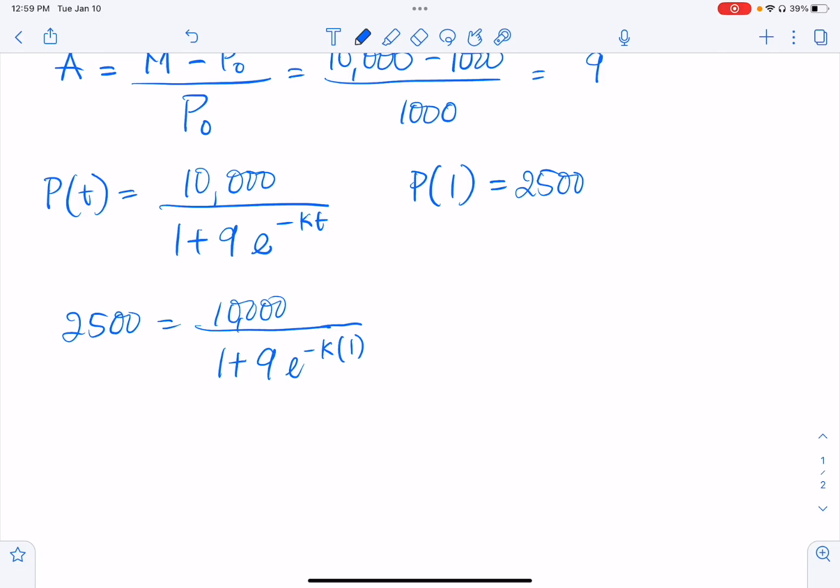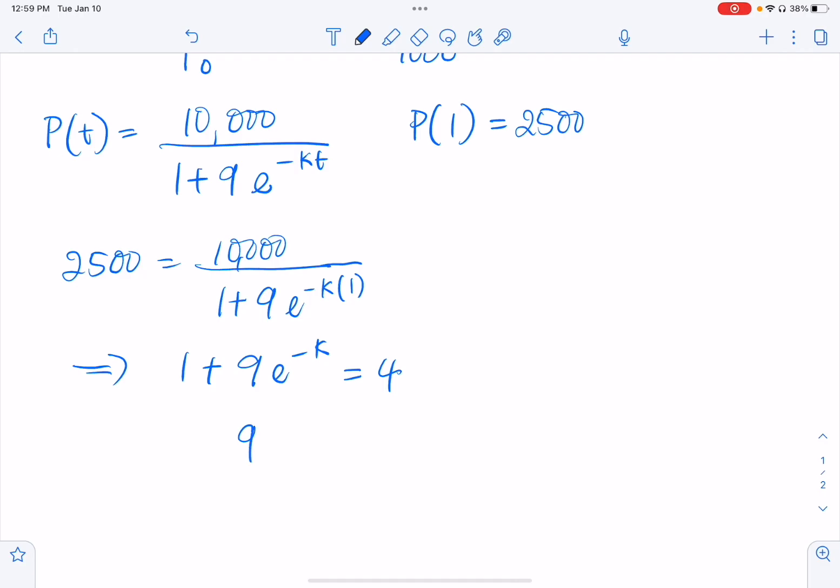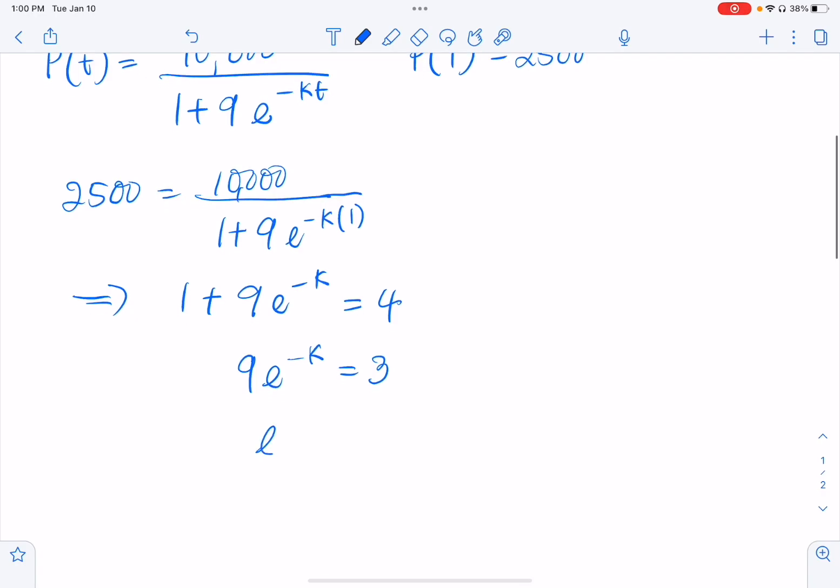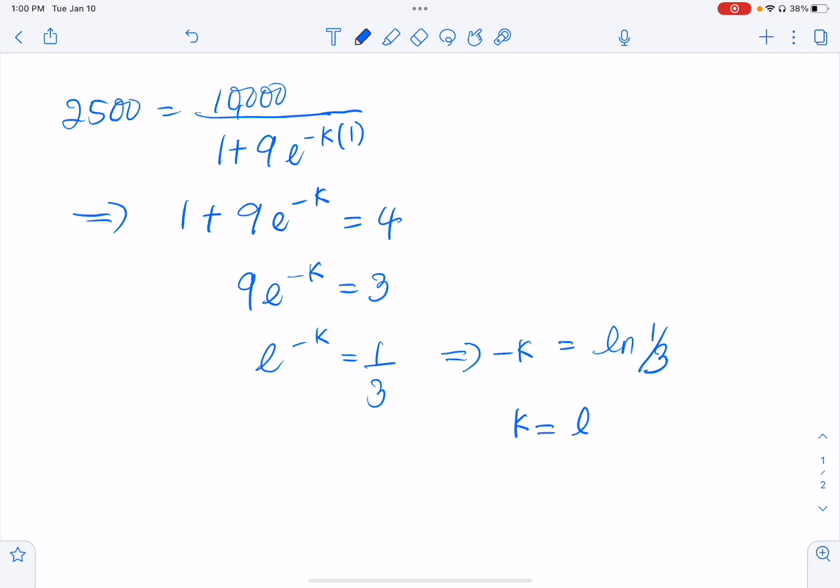So solving this equation, I ended up with 1 plus 9e to the negative K equals 4. Therefore, we have 9e to the negative K equals 3. So e to the negative K is 1 third. Therefore, negative K is ln 1 third. So K is ln 3.